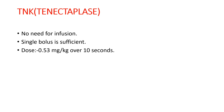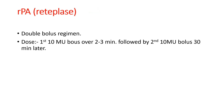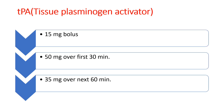The next agent is reteplase, which uses a double bolus regimen. The first bolus is 10 million units given over 2 to 3 minutes, followed by a second bolus of 10 million units given 30 minutes after the first bolus.